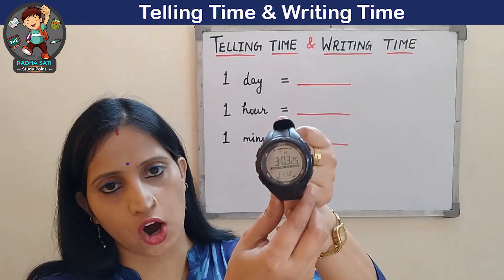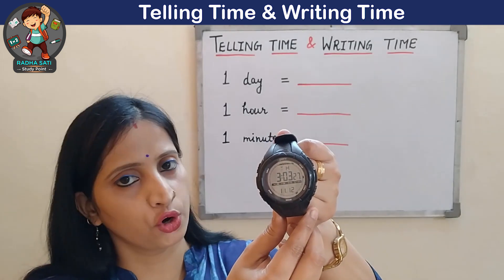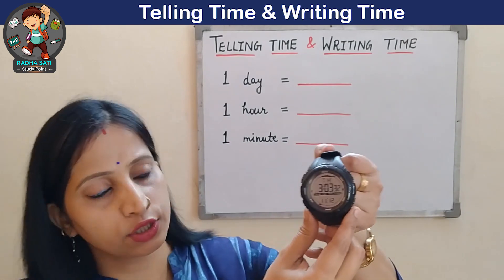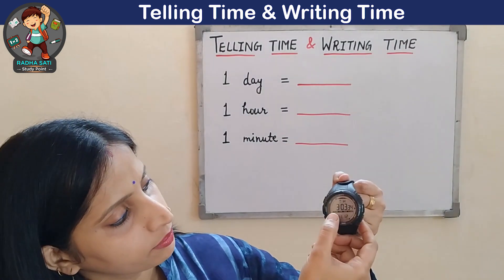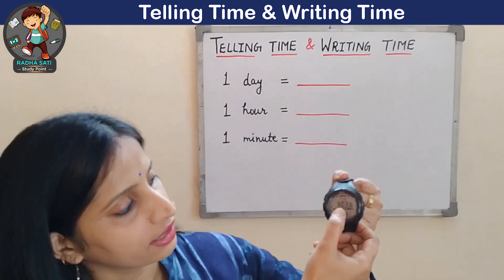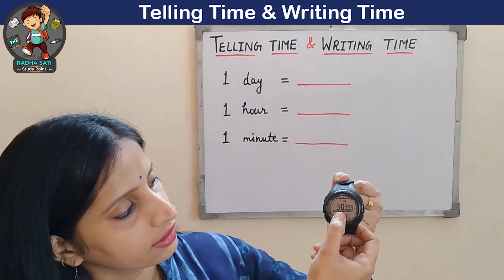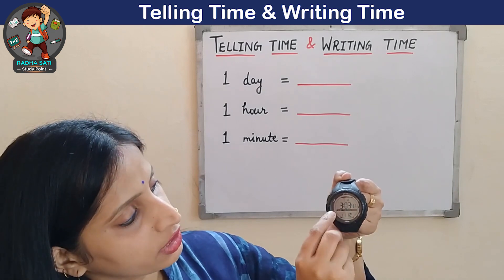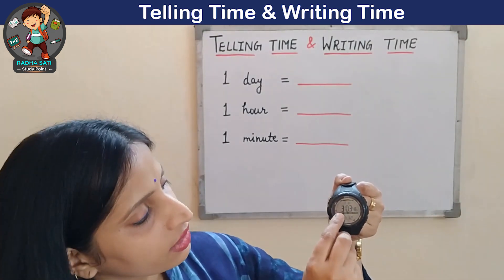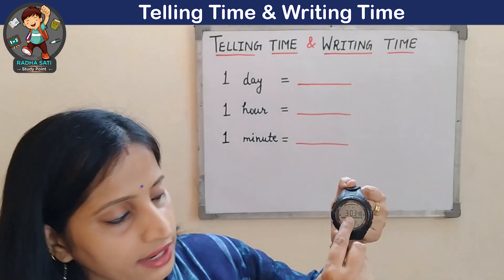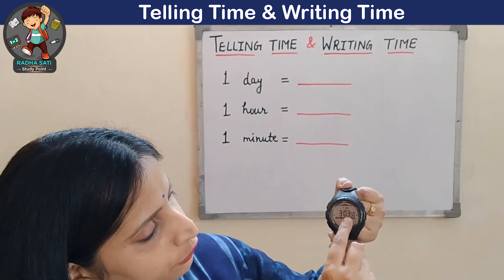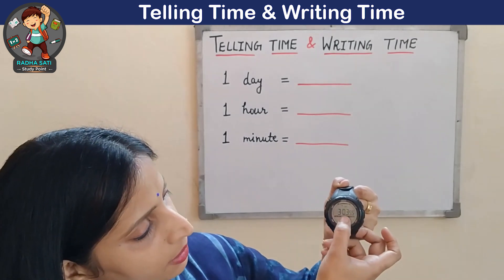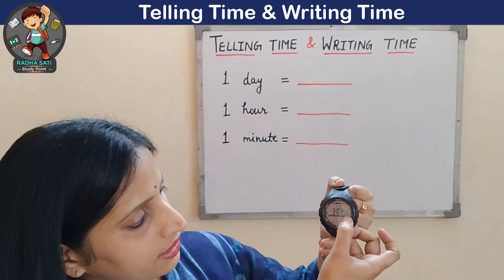This is a digital watch. A digital watch does not have hands — it always shows the time in numbers. For example, this time shows 3, then 2 dots or colon, then 03, which means minutes. So the first 3 represents hours, the second number represents minutes, and then seconds. It is 50 seconds, so the time is 3 hours, 3 minutes, and 56 seconds.